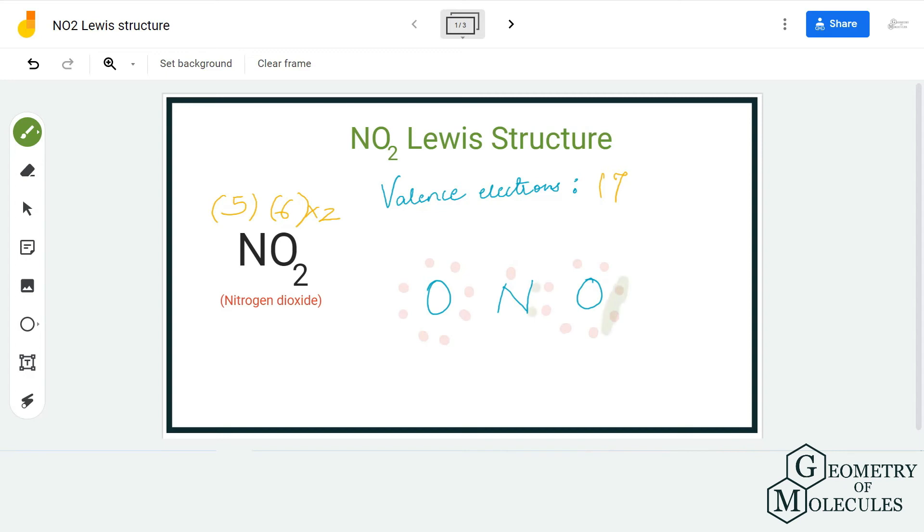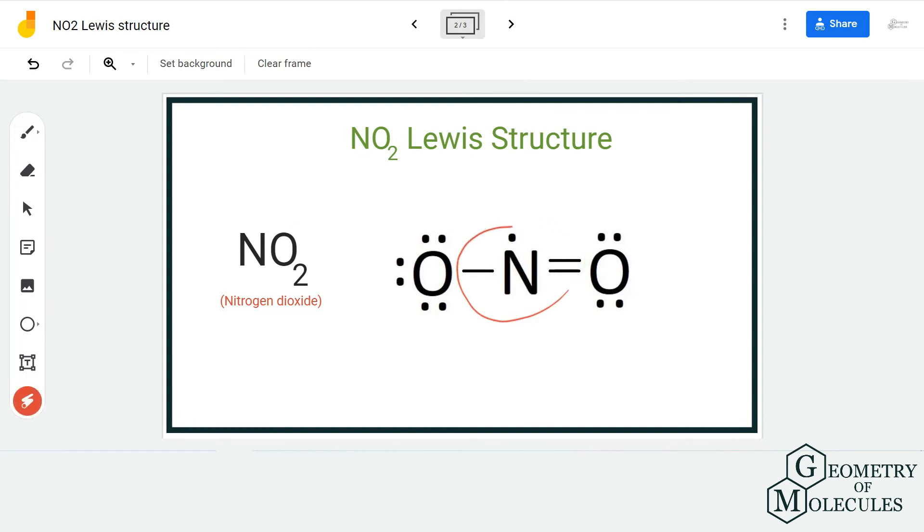That way oxygen will still have a complete octet, but we are trying to have as many electrons as possible in the outer shell out of eight. Here nitrogen has seven valence electrons in its outer shell, which is the most we can do if we want to have a relevant Lewis structure. This is how you can arrange the electrons and arrange the bonds.